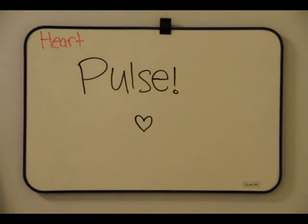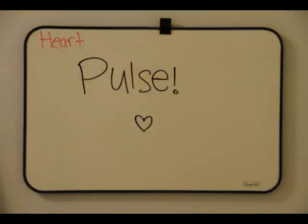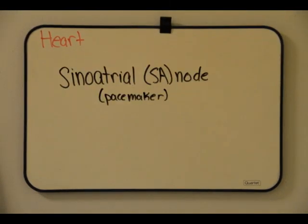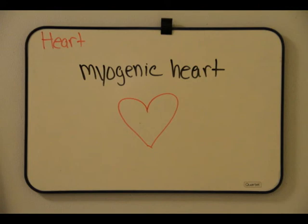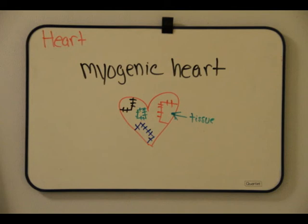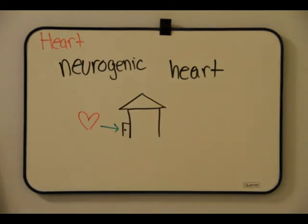Cardiac muscles are self-excitable and have their own intrinsic rhythm. A region of the heart called the sinoatrial, or SA, node, or pacemaker, sets the rate and timing at which all cardiac muscles contract. The vertebrate heart is referred to as a myogenic heart because it is composed of specialized muscle tissues. In contrast, hearts of arthropods originate in motor nerves arising from the outside, an arrangement called a neurogenic heart.